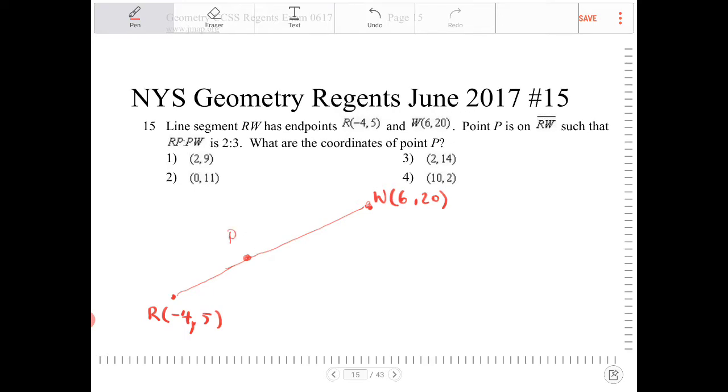Point P will partition this line into ratios of 2 to 3. Ratios of 2 to 3 suggests that point P is going to be somewhere closer towards point R than it is towards point W. So I'm going to place P here. I have no idea what that coordinate is. But what I do know is the point P partitions the line segments, so therefore I'm going to say RP will have a length of 2N, and PW will have a length of 3N. This sustains that ratio of 2 to 3.